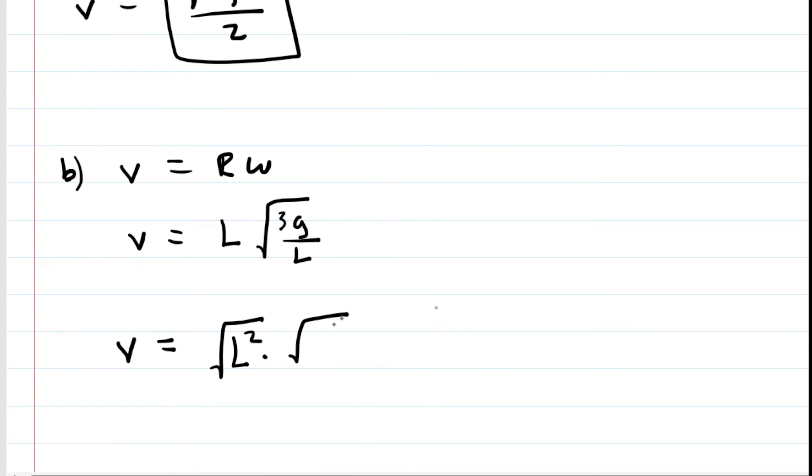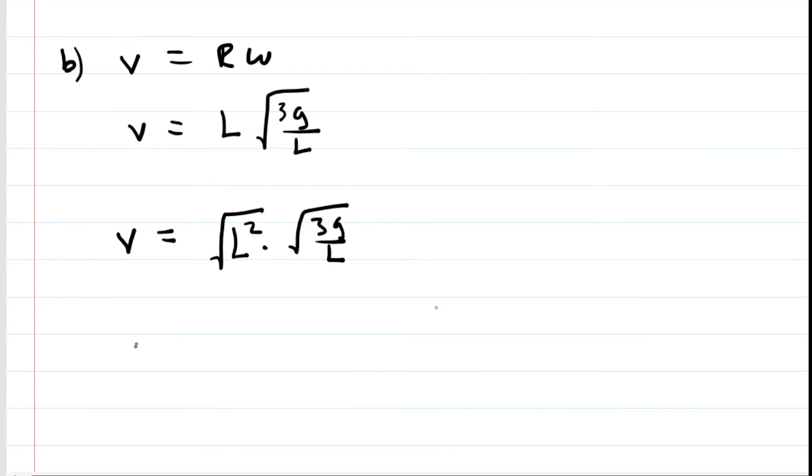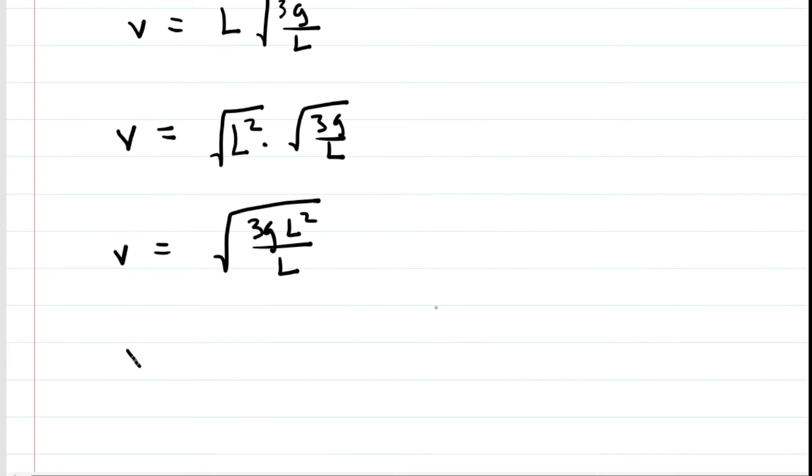That maintains its original value. Now we have two square roots that are being multiplied together so we can sort of condense them into one square root of a product. So we would have 3G times L squared all over L. A factor of L cancels in the numerator and denominator, and we end up with the square root of 3GL. This is the correct answer to part B.